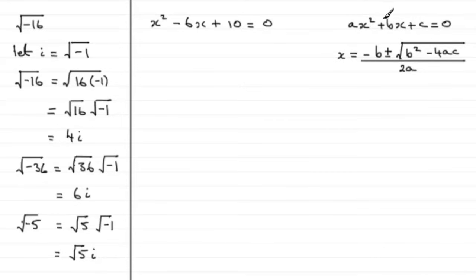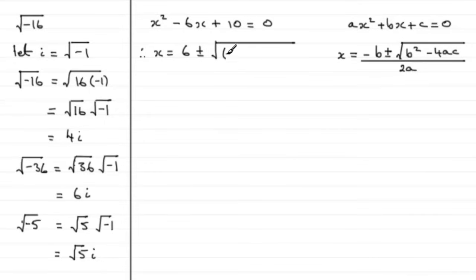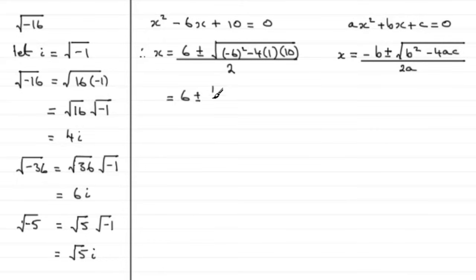Remember, if you've got an equation ax squared plus bx plus c equals 0, then we can use the quadratic formula to solve for x. So using the quadratic formula here, x equals minus b — with b being minus 6, that gives us 6 — plus or minus the square root of b squared, so that's minus 6 all squared, minus 4 times a, which is 1, times c, which is 10, all divided by 2a, which is 2. Working that out, we get 6 plus or minus the square root of 36 minus 40, which gives us the square root of minus 4, all divided by 2.